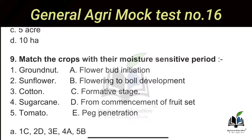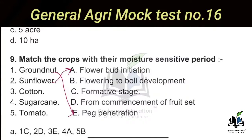The ninth question: Match the following crops with their moisture sensitive period. Groundnut — peg penetration; Sunflower — flower bud initiation; Cotton — flowering to boll development; Sugarcane — formative stage; Tomato — commencement of fruit set.